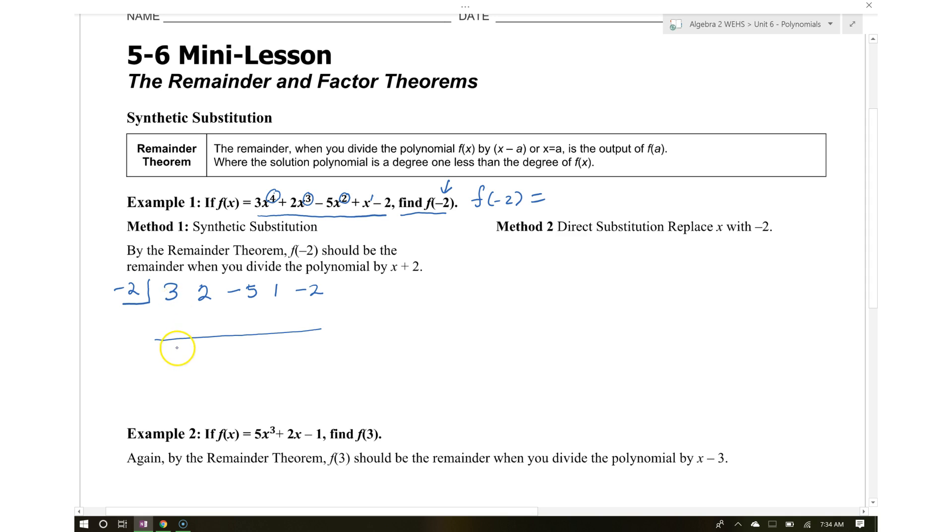First, bring down the 3. Multiply negative 2 times 3, which gives you negative 6. You're always adding here, so 2 plus negative 6 gives you negative 4. Then multiply negative 2 times negative 4, which gives you 8. Negative 5 plus 8 gives you 3.